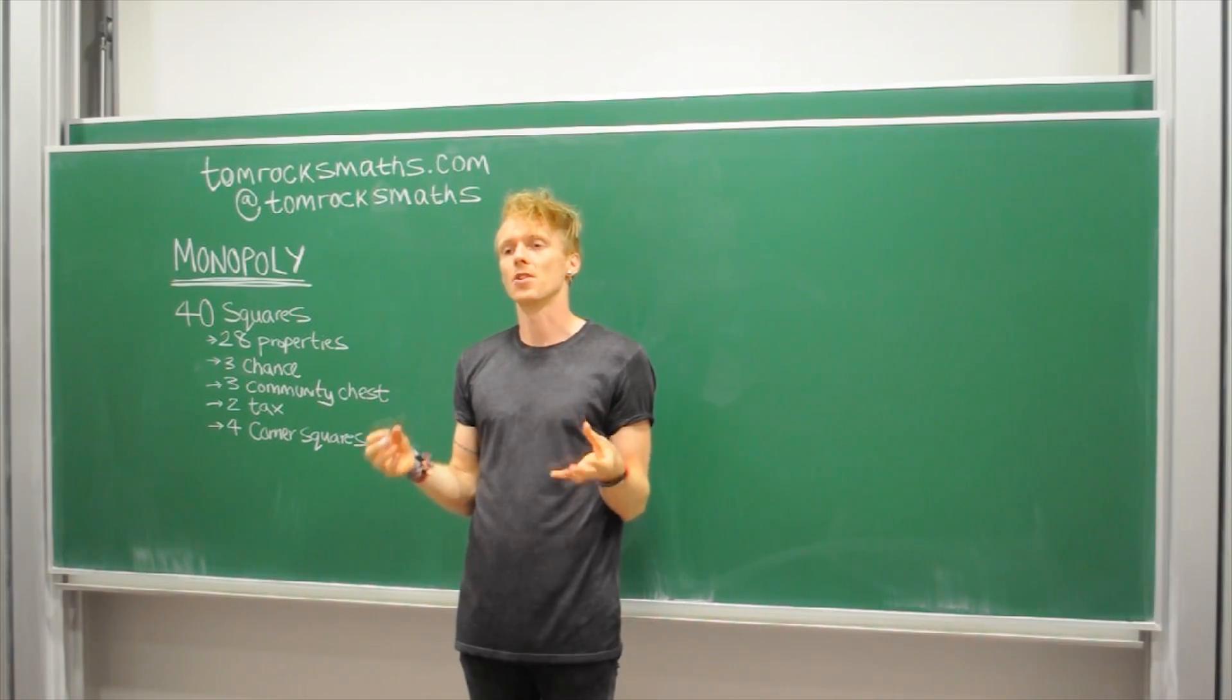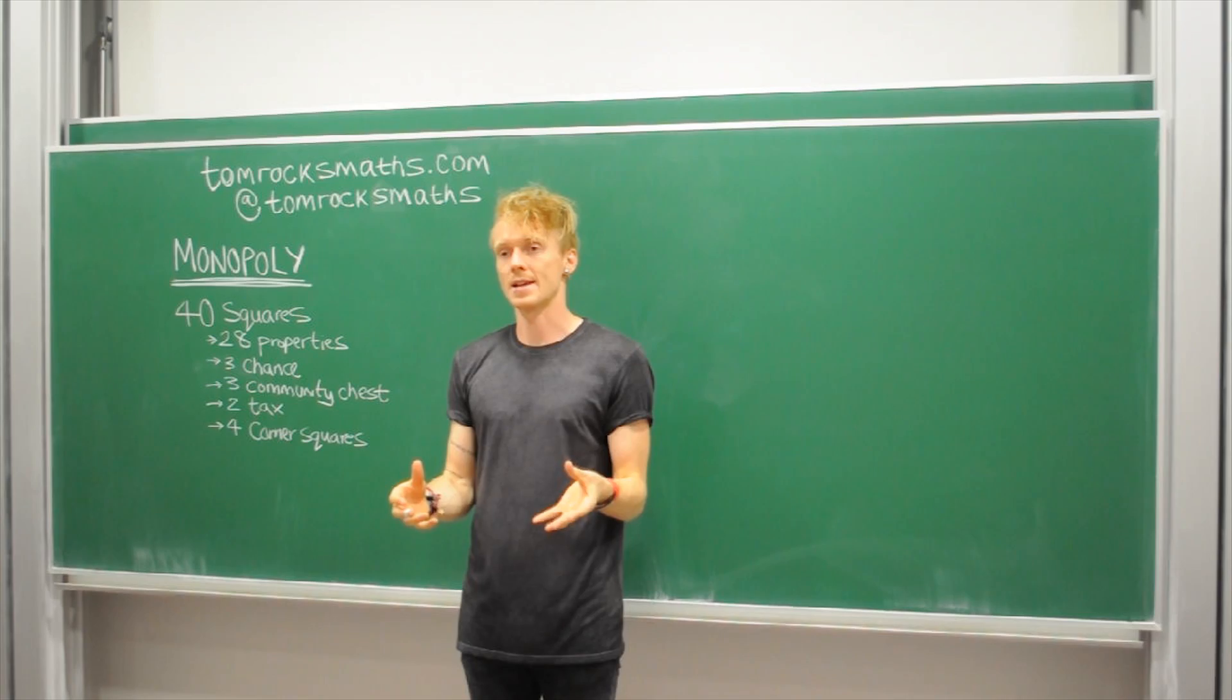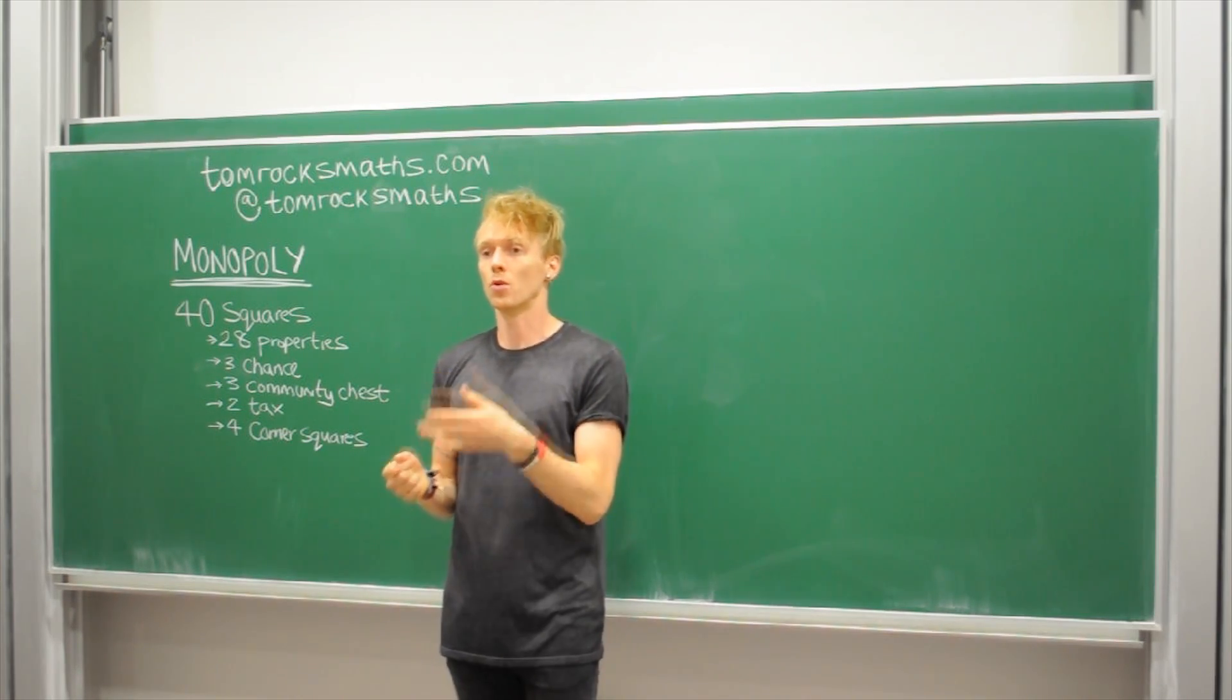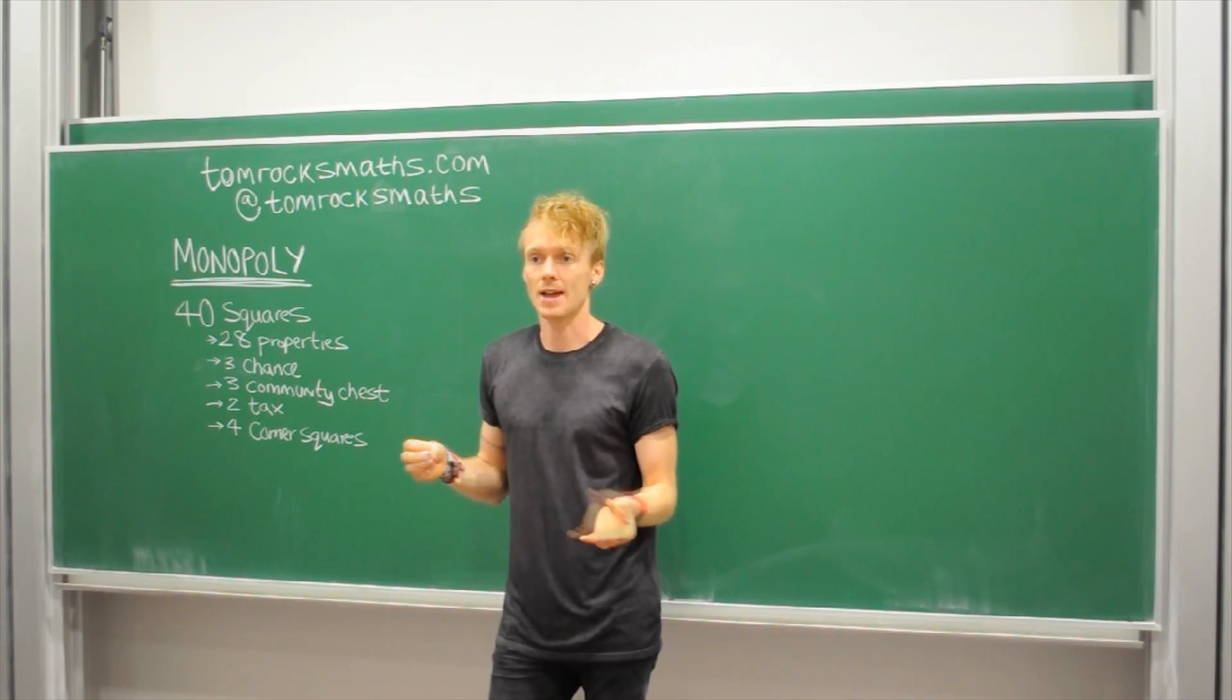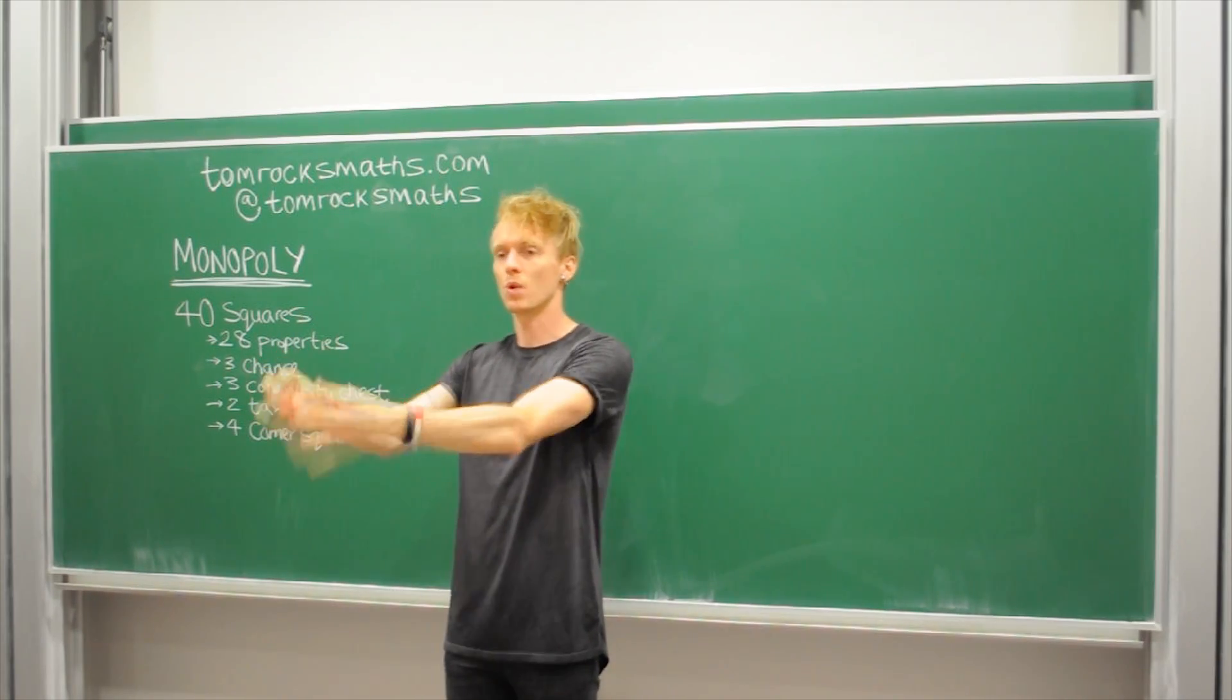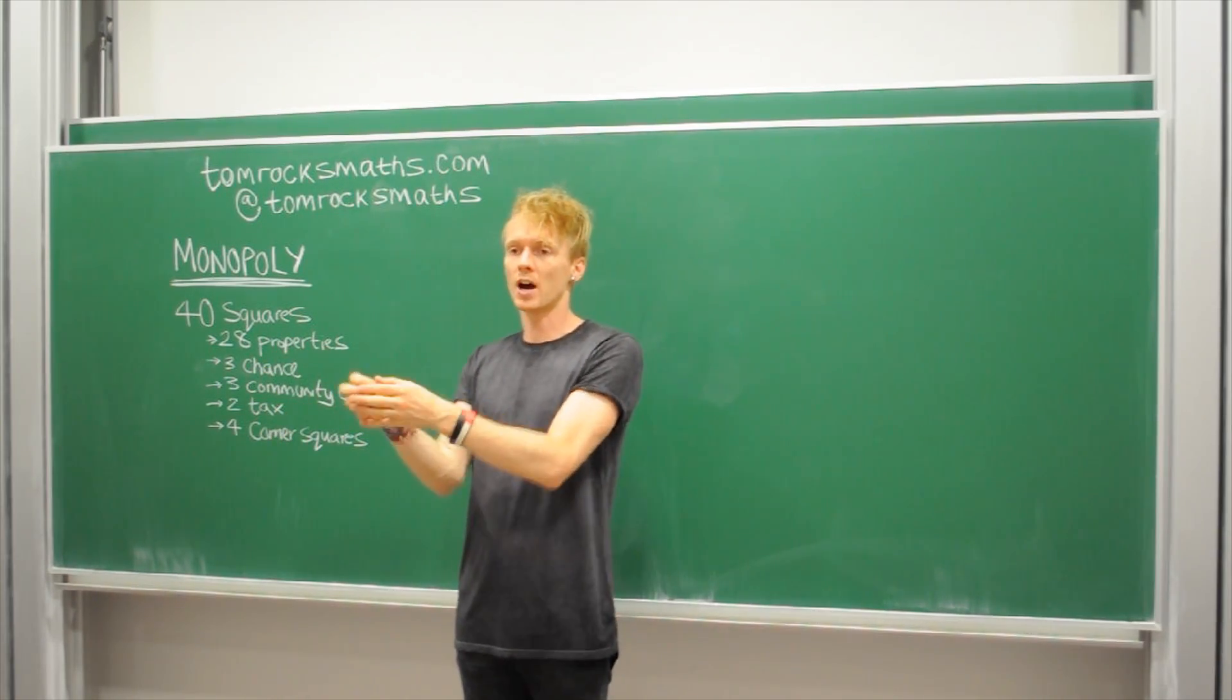If it was equally likely to land on any of the 40 squares, two and a half percent of all turns would end up on any particular square. So you could just pick any square that you wanted and say right, two and a half percent of all turns would land on this square.